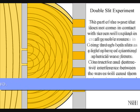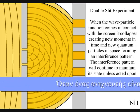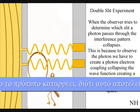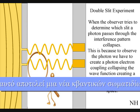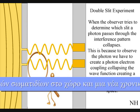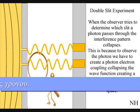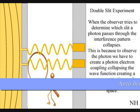When the observer turns on a detector to determine which slit a photon passes through, the interference pattern will collapse. This is because to observe the photon we have to create a photon-electron coupling collapsing each wave front into a new quantum particle that will have its own position in space and time.